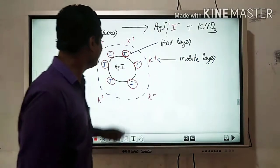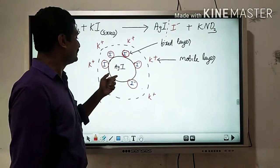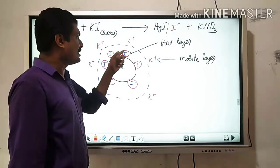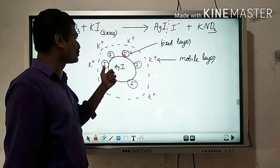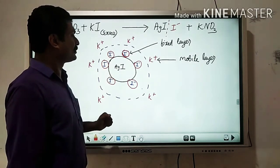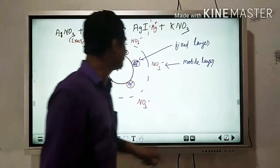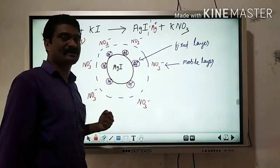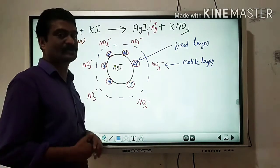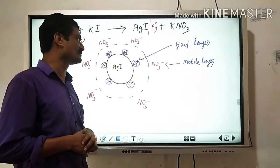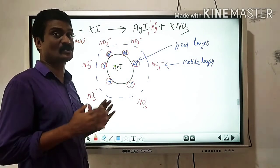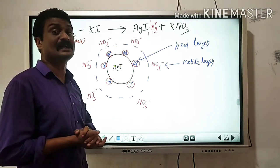This adsorption is called preferential adsorption. In the first case, AgI particles adsorb I⁻ ion — the common ion — from the solution. In the second case, AgI particles adsorb Ag⁺ ion — the common ion — from the solution when excess AgNO3 is added. Both cases are examples of preferential adsorption.